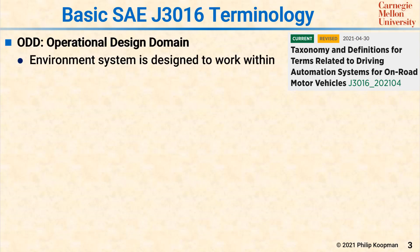The first term is ODD, Operational Design Domain. The ODD is the environment the system is designed to work within. That would include not only geographic constraints, but also lighting, weather, and other factors of the environment that the system is intended to be able to handle.